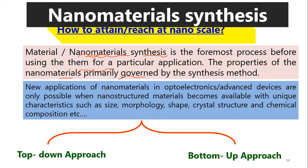When we use nanomaterials in optoelectronic or advanced devices, the synthesis method determines what kind of size we need, the morphology and shape — whether we need an octagon, hexagon, cube, nanowires, nanoparticles, quantum dots, or pentagon shapes. The crystal structure and the growth process also play a very important role, as does the chemical composition. All these things we can control during synthesis, and they will affect the performance of any device made from the nanostructured material.